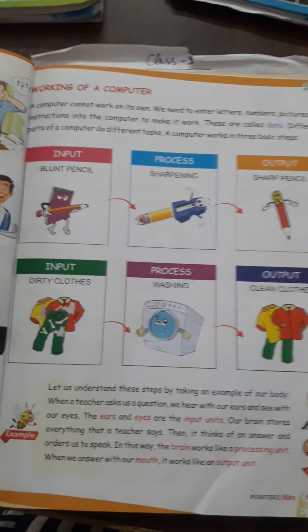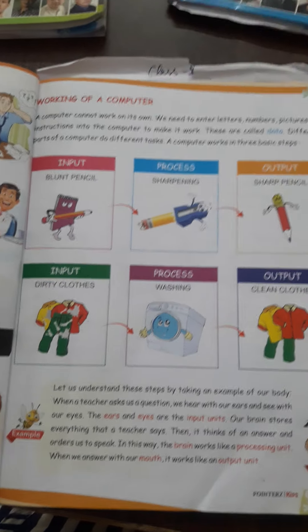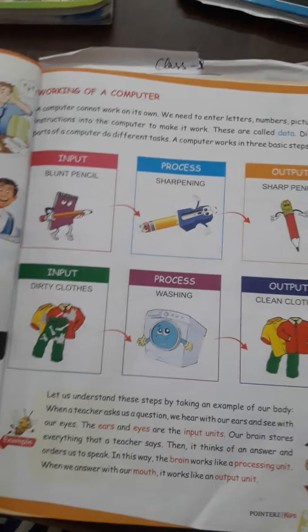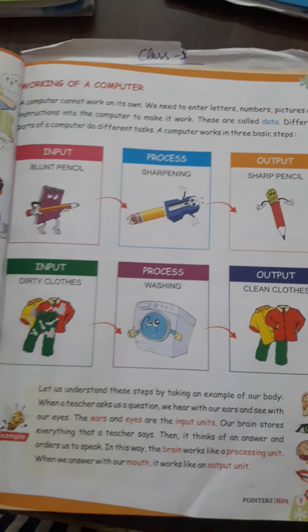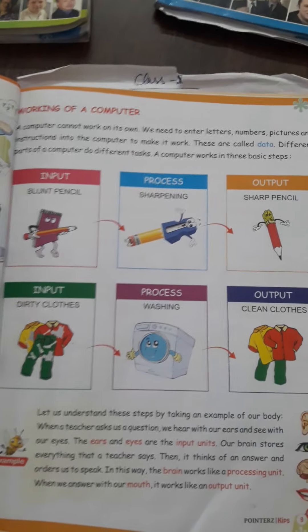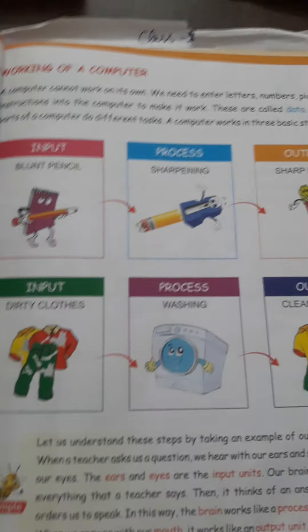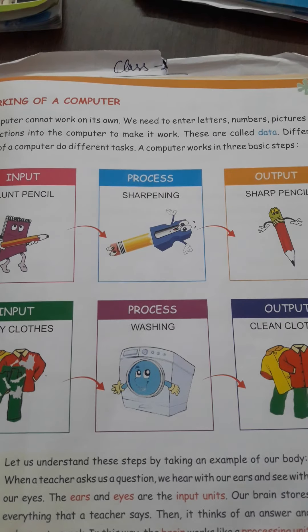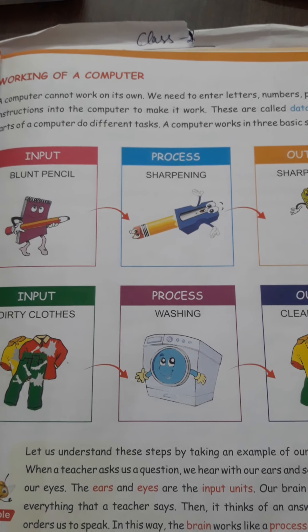Now, how does a computer work? Working of a computer: input, process, and output. Input based — जो data और command हम enter करते हैं, computer उसी के ऊपर processing करता है, यानी task करता है, then हमें output show करता है।